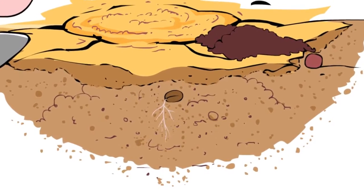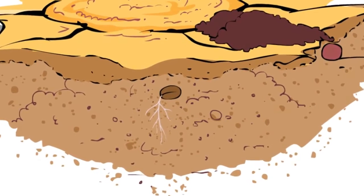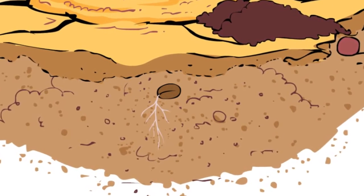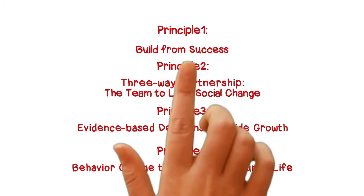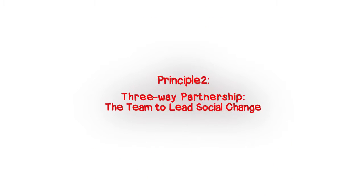The process of taking root in a community requires more than seed and soil. Principle 2: Three-way partnership.